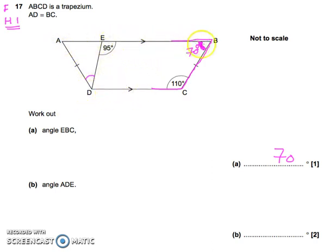And to do that, we can first of all mark on this diagram what angle EAD is. It is the same as the last angle we just worked out, 70 degrees, because it's an isosceles trapezium. So they're going to have the same base angles.